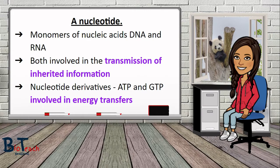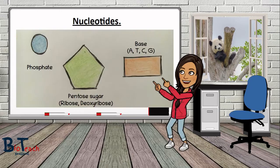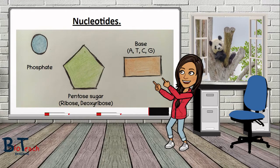We also have nucleotide derivatives such as ATP and GTP, which are both involved in energy transfers. It's a bit easier if you can picture the nucleotide first. A single nucleotide is made up of a phosphate group, a 5-carbon or pentose sugar, and a nitrogenous base. ATP is known as a nucleotide derivative because it consists of an adenine nitrogenous base linked to a ribose sugar and three phosphate groups.